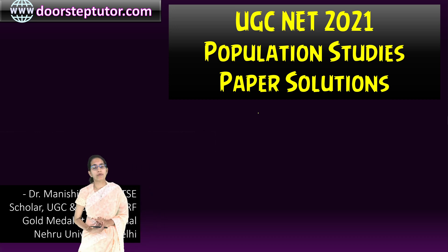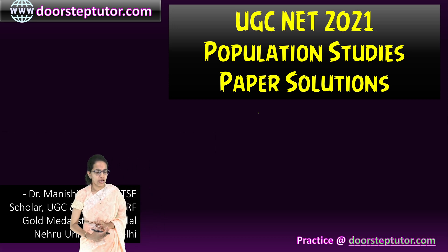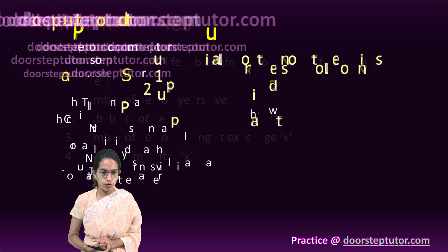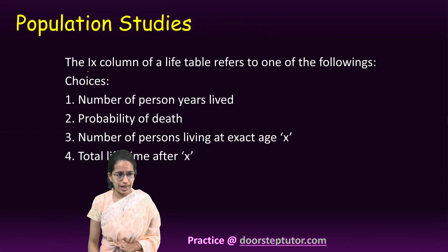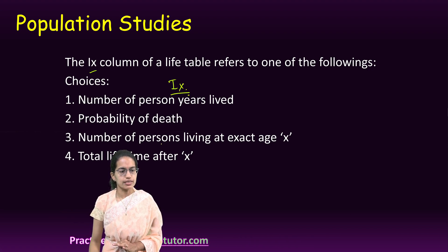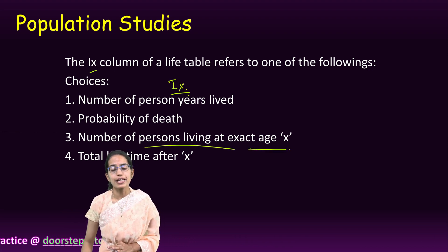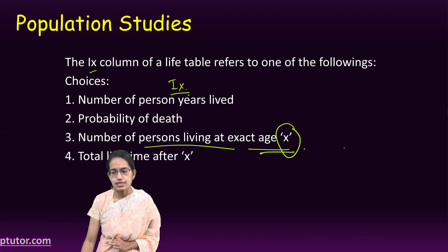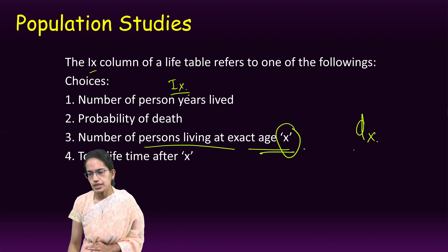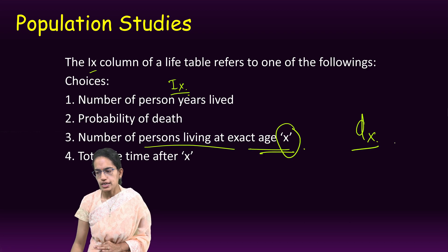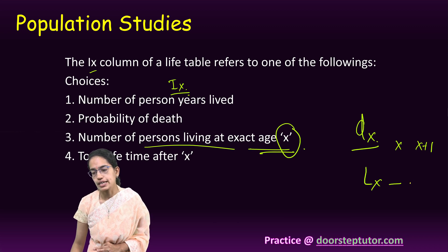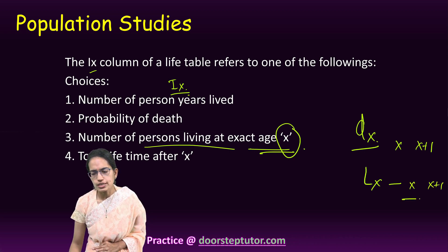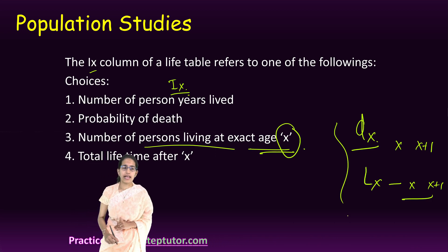Let's solve some questions from the Population Studies paper 2021. One question focuses on the life table — specifically, what is lx in a life table? lx is the number of persons living at exact age x. Similarly, dx refers to the number of deaths between exact age x and x+1, and Lx is the number of persons who lived between exact age x and x+1.